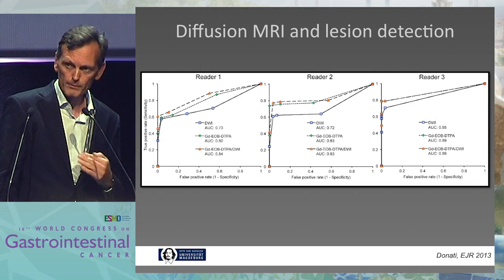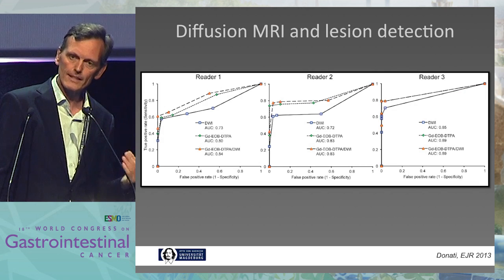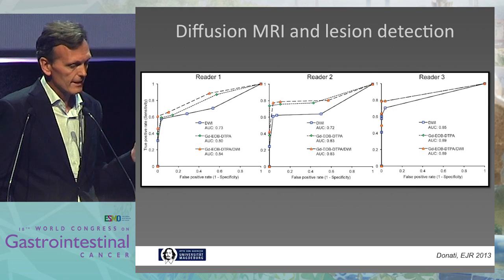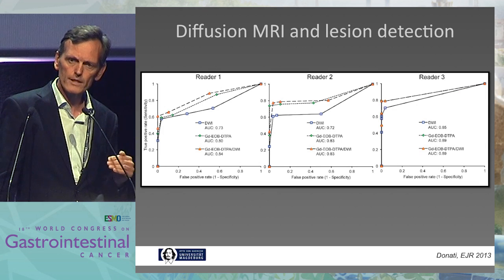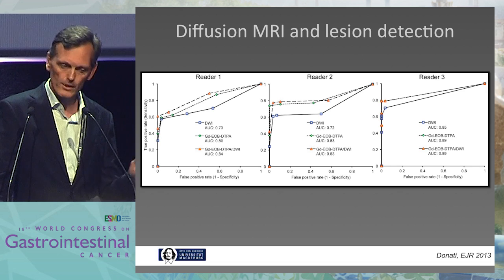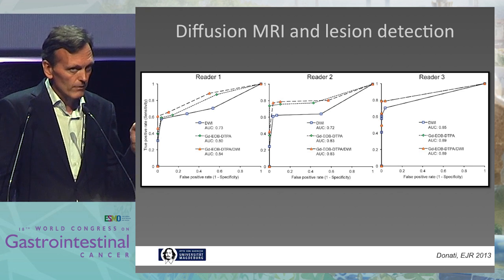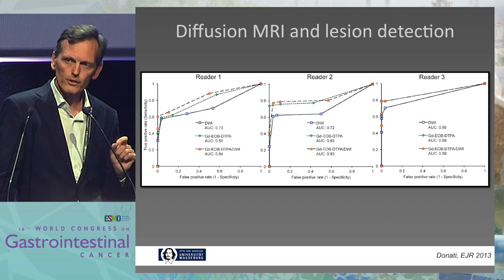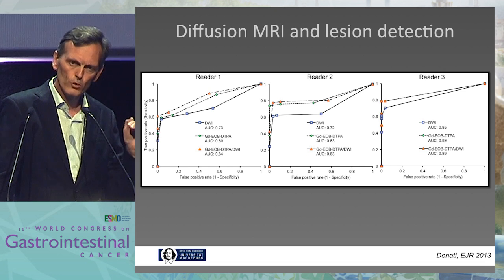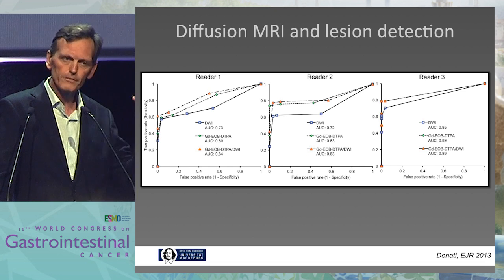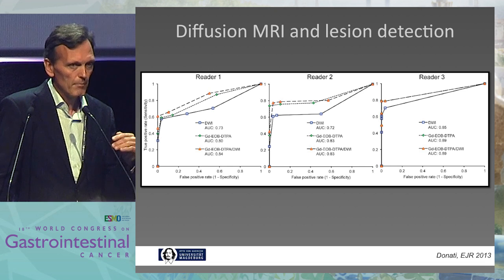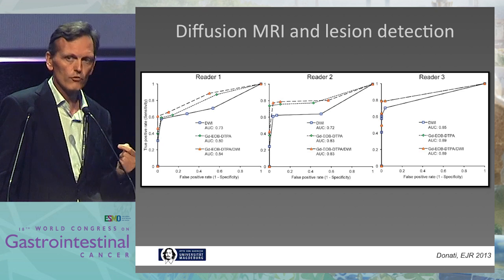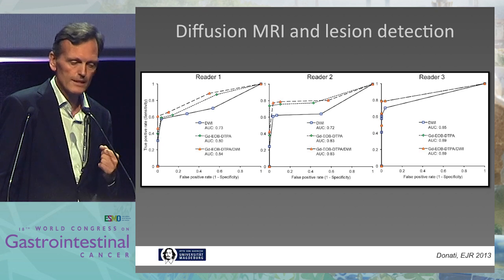What does diffusion-weighted imaging do? The boring part, to be honest, is lesion detection, because there are things that are probably better. This is a study that compared diffusion-weighted MRI to the gold standard, which is hepatobiliary imaging. Usually, diffusion-weighted imaging loses against hepatobiliary imaging because it's very sensitive to motion, specifically in the left liver lobe where heart motion is difficult. But if you combine diffusion-weighted imaging with hepatobiliary imaging, the rate of lesion detection is highest.